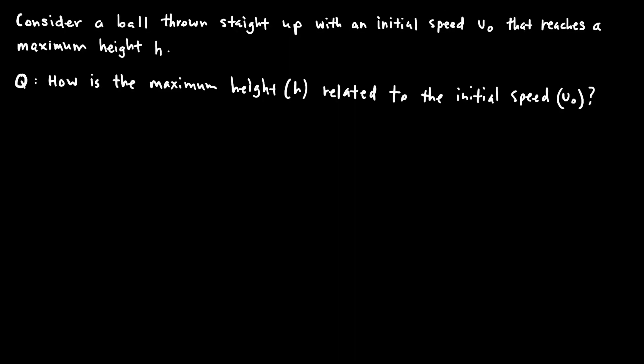Now I'd like to consider a ball that is thrown straight up with an initial speed v_naught that reaches a maximum height h. What I'd like to know is: what is the relationship between the initial speed v_naught and the height h? How is the maximum height h related to the initial speed v_naught?